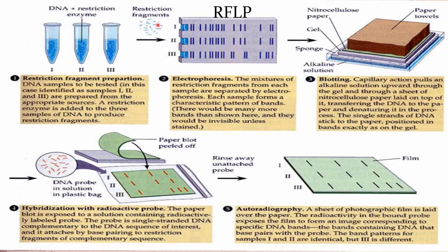Now the procedure of RFLP. We take three samples, two of which are control samples and the third is a mutated sample. DNA in an Eppendorf tube is treated with restriction enzymes which cut the DNA at particular sequences. The restriction fragments from each sample are separated by electrophoresis, and each sample forms a characteristic pattern of bands.